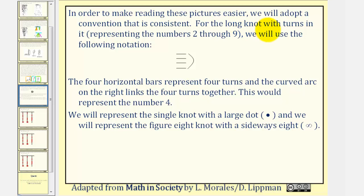In order to make reading these pictures easier, we will adopt a convention that is consistent. For the long knot with turns in it, representing the numbers two through nine, we will use the notation seen here. The four horizontal bars represent four turns, and the curved arc on the right links the four turns together. This would represent the number four. We will represent the single knot with a large dot, and we'll represent the figure-eight knot with a sideways eight. Remember, the figure-eight knot represents one.